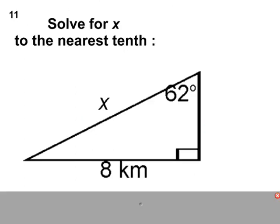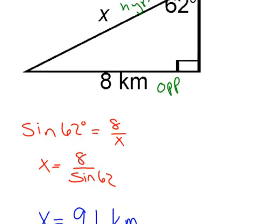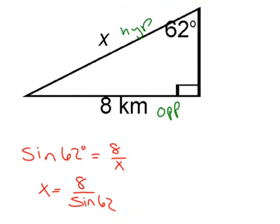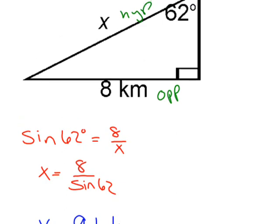Pause the video and try this one on your own. Okay, first thing I do: opposite and hypotenuse, so I know I'm dealing with sine. Write my equation: sine of 62 degrees equals 8 over x. Therefore, you cross multiply and you take 8 divided by sine of 62, and I get 9.1 kilometers.